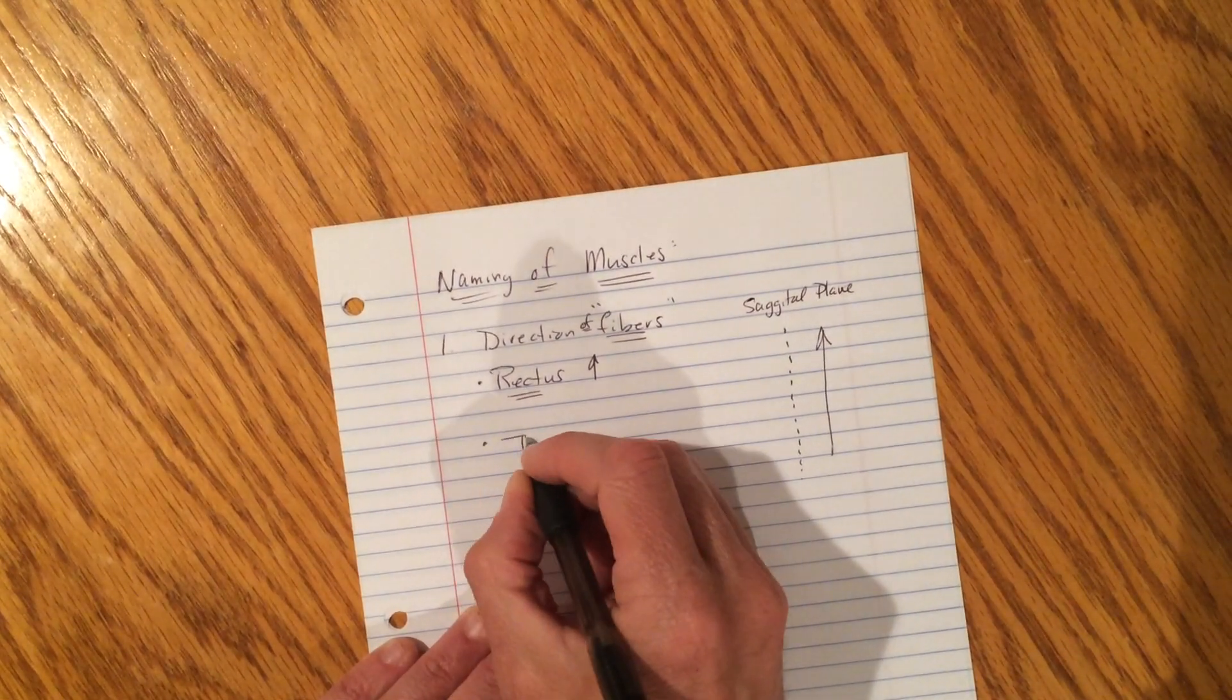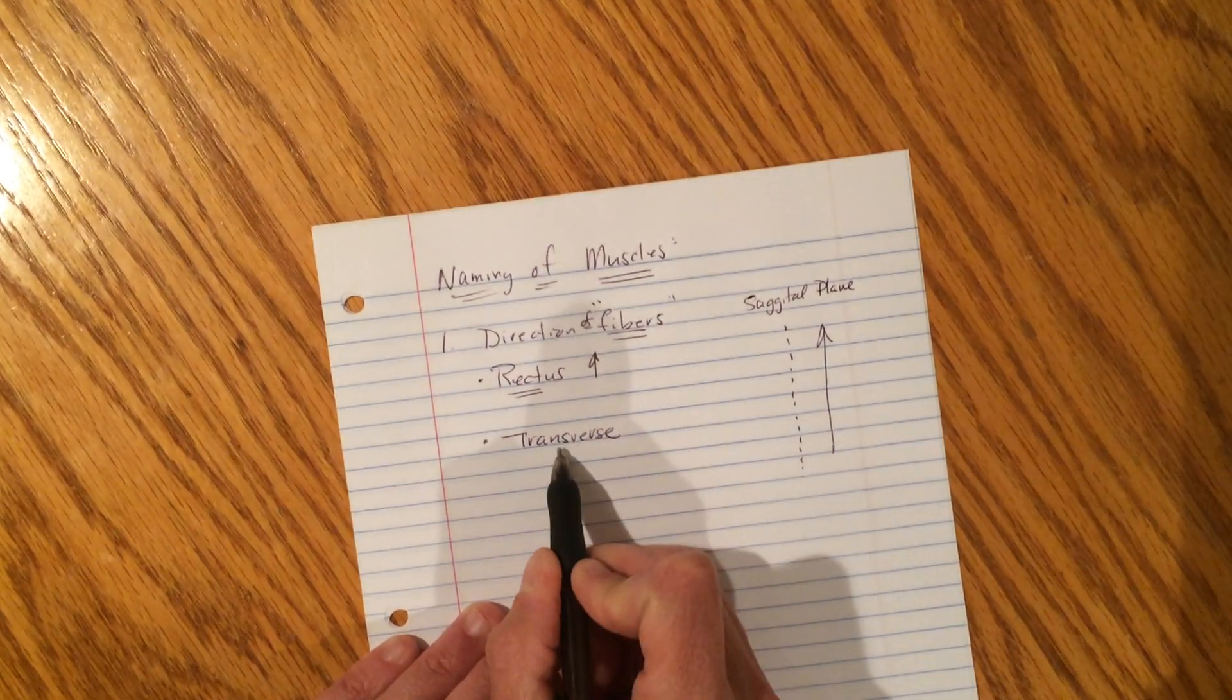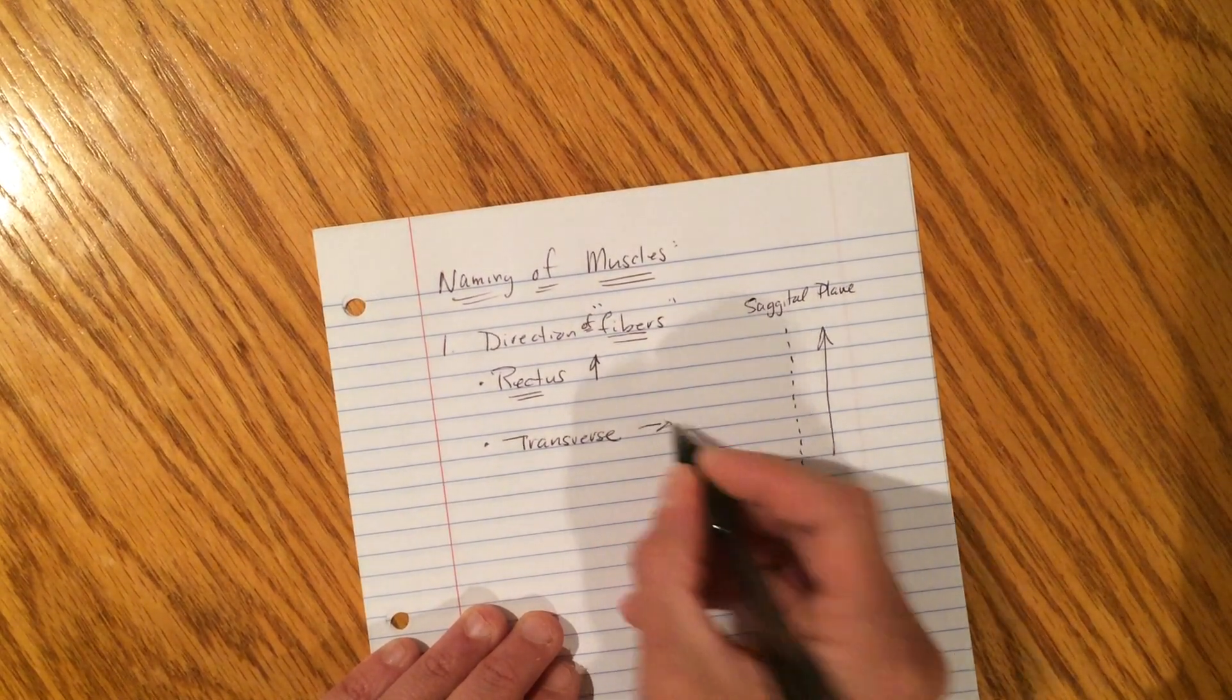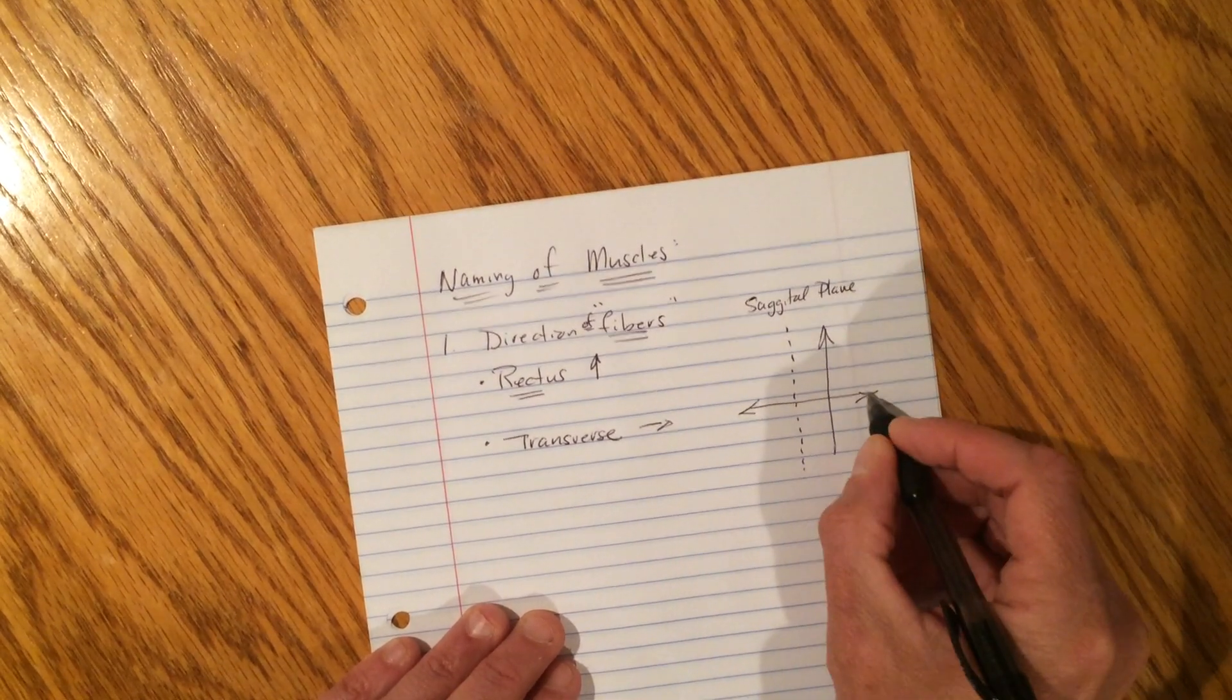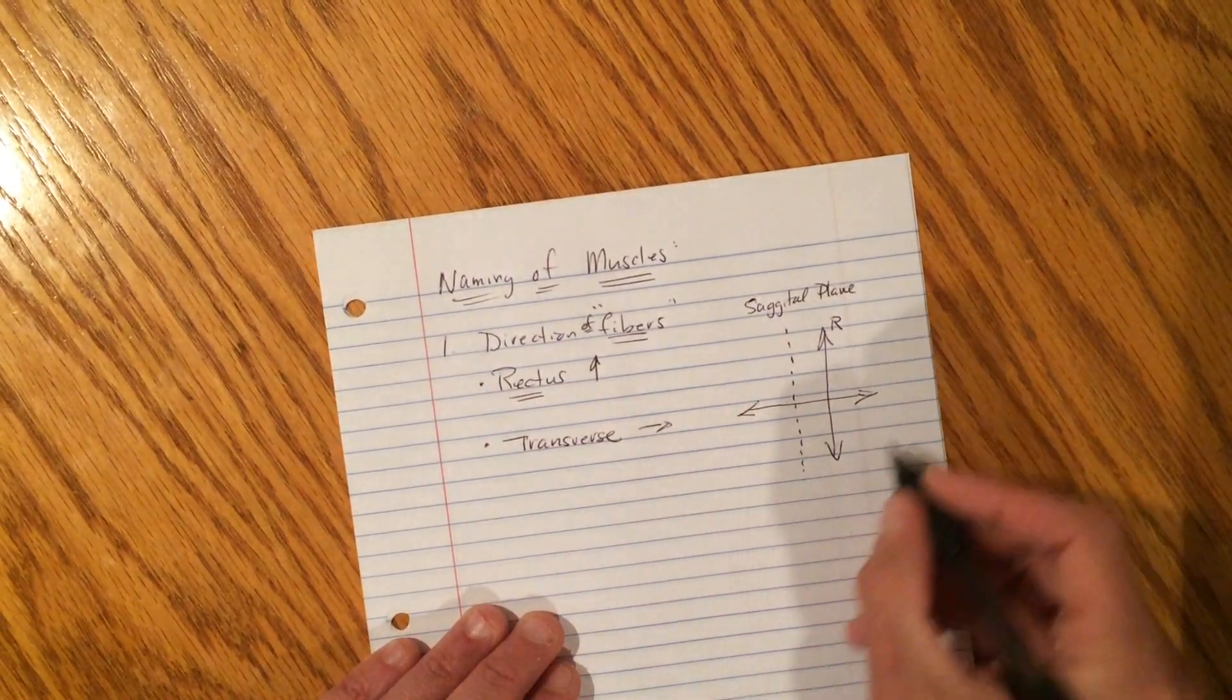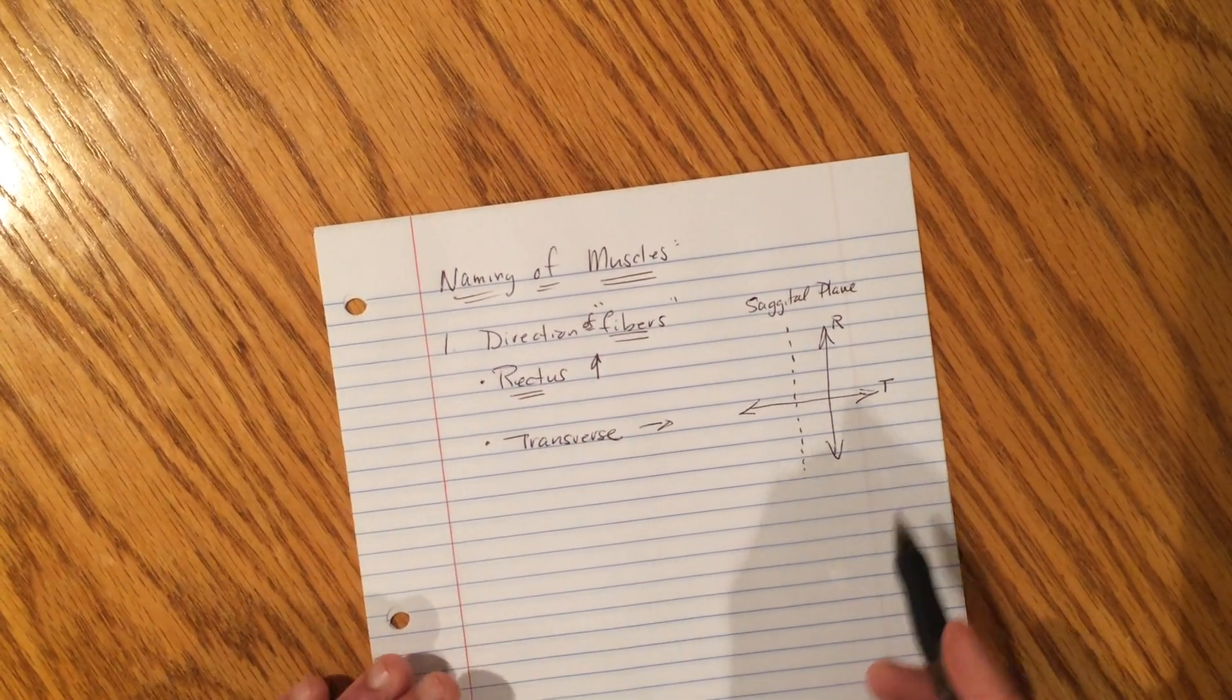The next one is the word transverse. If you see that word in the name of a muscle, it refers to the direction of fibers. And transverse means to go from side to side. So these fibers will run this way.